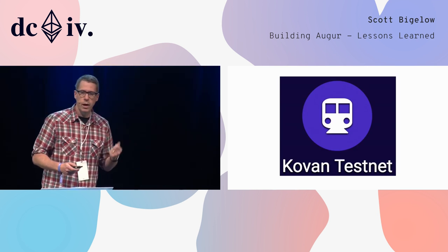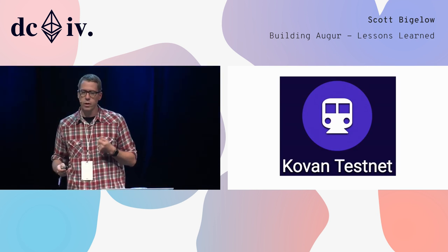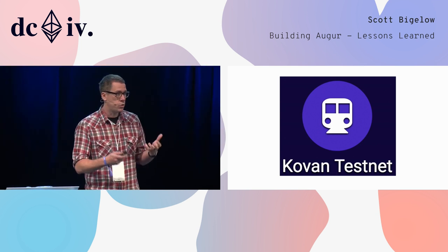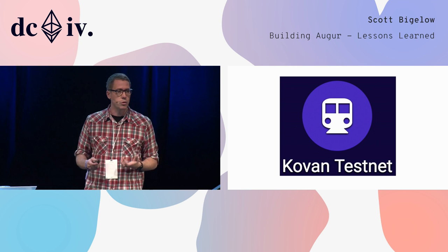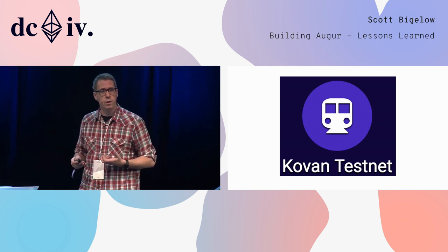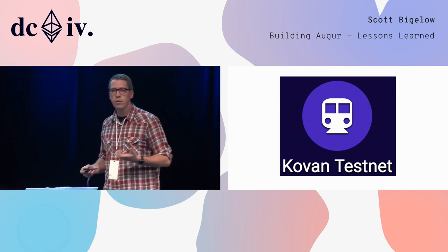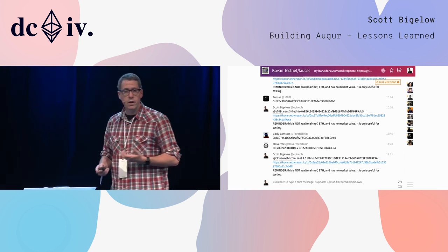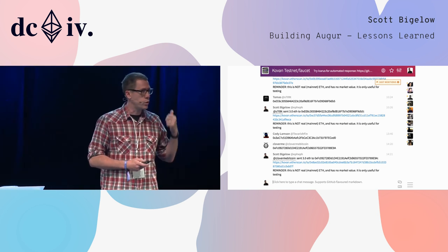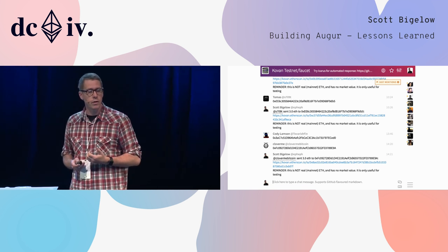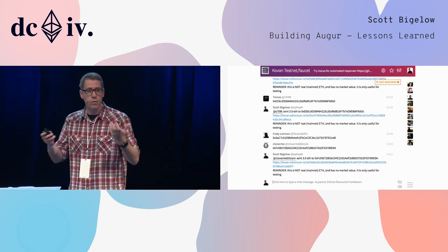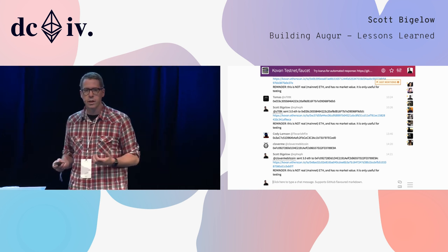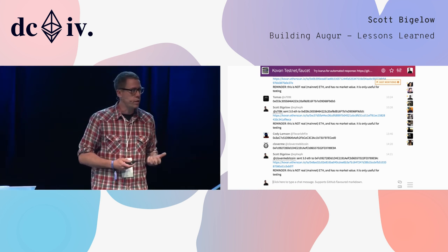Kovan is a parity-only proof-of-authority network. Proof of authority means there's a small set of validators that are eligible to mine this network. So if you want to come by any Kovan ETH, you need to go to a faucet. One of the popular faucets at the time was a Gitter channel where you could type in your Kovan ETH address and somebody would come by — maybe in four hours, maybe in 36 — and send you some Kovan ETH.